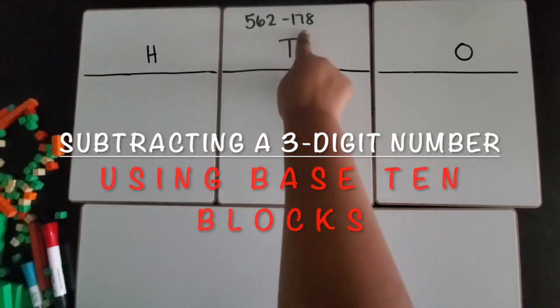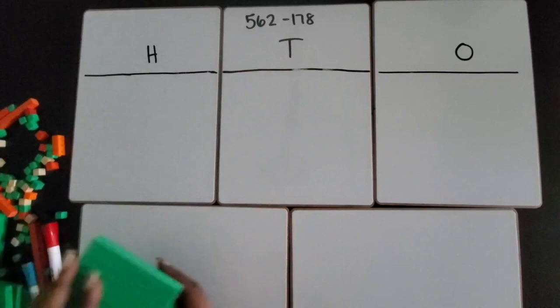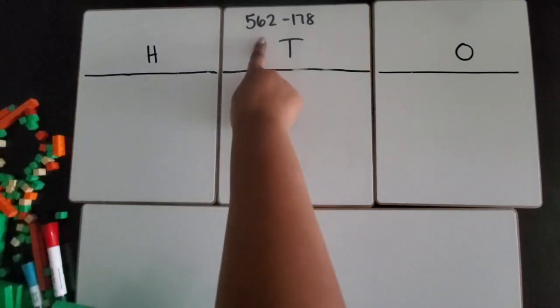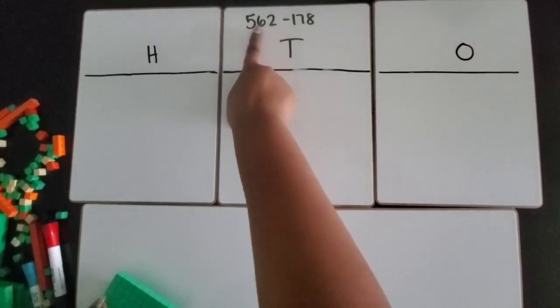We are going to subtract one three-digit number from another three-digit number using base 10 blocks. I'm going to start by building the first number, and I'm going to only build the first number. It's 562, there are five hundreds in 562.